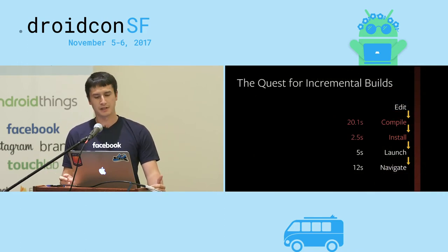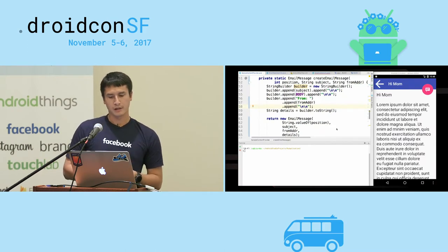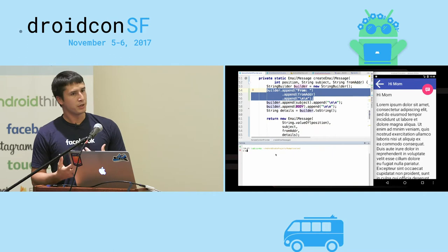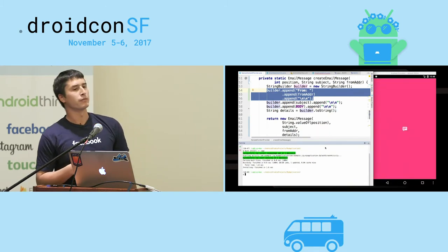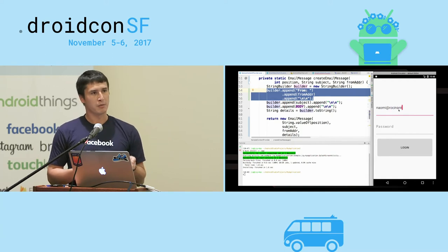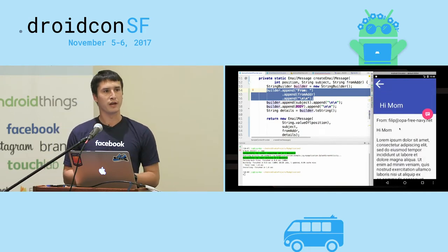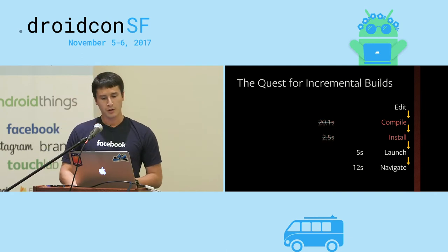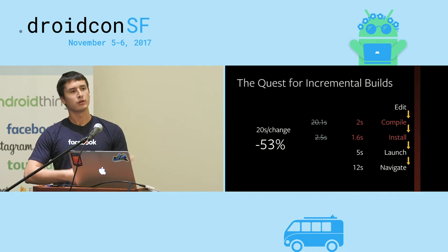This is the state of Buck today. Let's see what happens when we turn all of those features on and rerun that demo scenario. I make that same change, tell Buck to build and install my app — and it's already done. Buck has reinstalled just the one module that has changed. I verify that my change did in fact make it into the app. We're down to just 20 seconds for this change end-to-end — a 53% reduction.